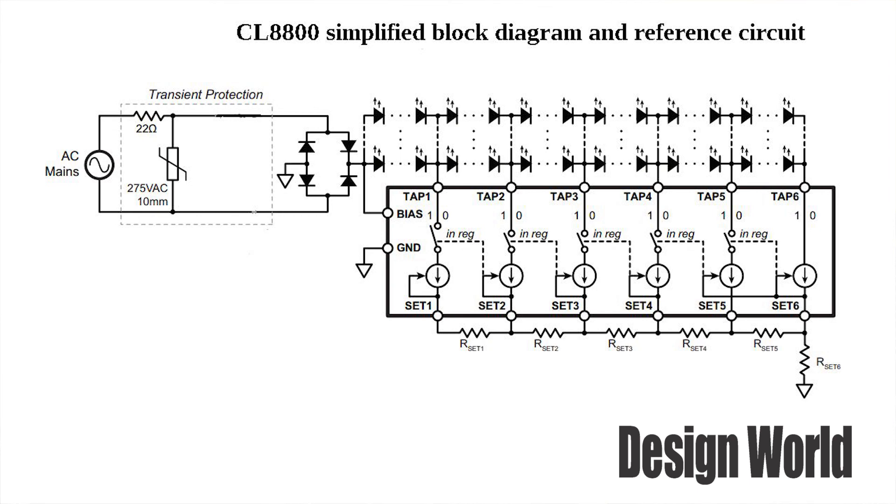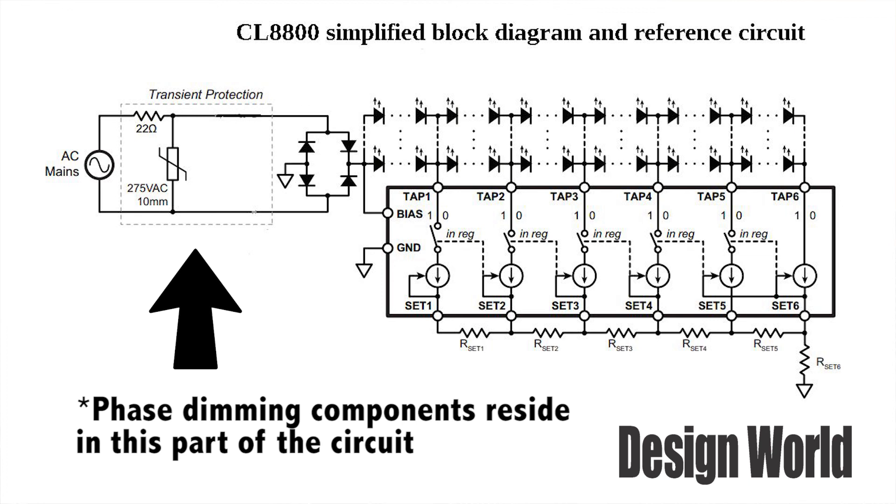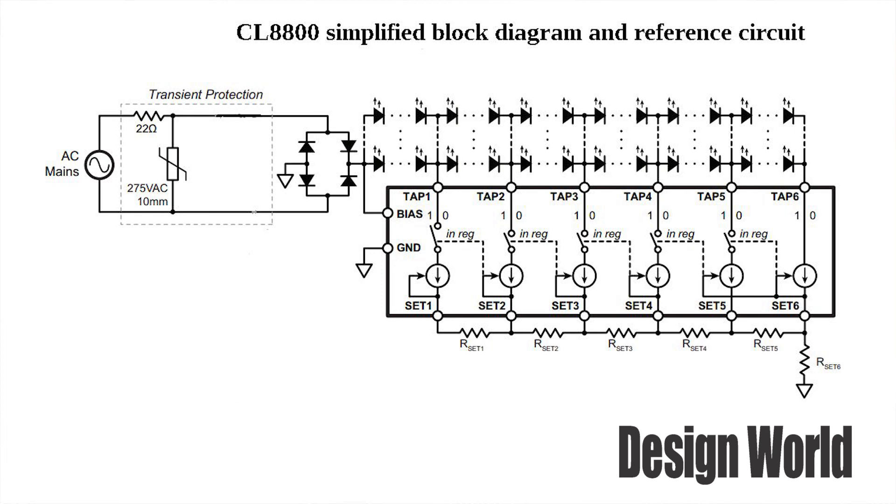An RC network consisting of a resistor and three capacitors in parallel on the input of the bridge rectifier provides phase dimming. Two other components handle transient protection on the connection to the AC line. In all, there are 13 discrete components on the flex circuit that make up the transient protection, phase dimming, and set the currents in the LED strings.